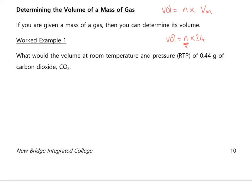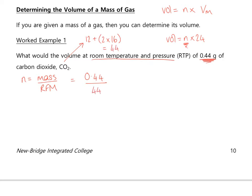In this question we're given a mass of carbon dioxide and will use volume = n × 24 because it's at RTP. First, work out the number of moles using n = mass ÷ RFM. The mass is 0.44 g; the RFM of CO₂ is 12 + (2 × 16) = 44. So 0.44 ÷ 44 = 0.01 moles of CO₂.